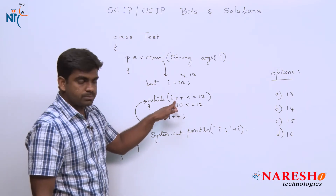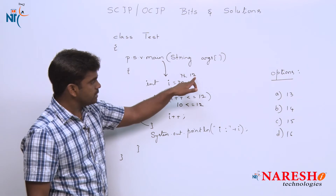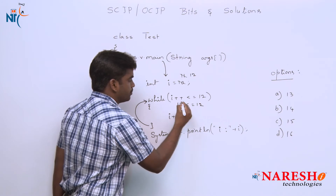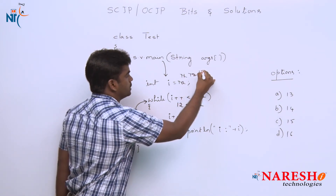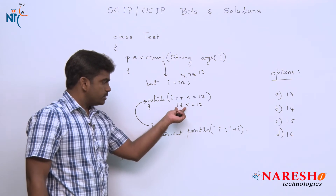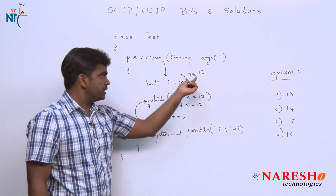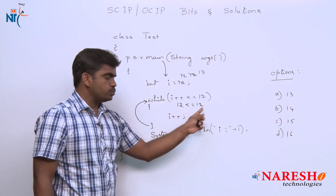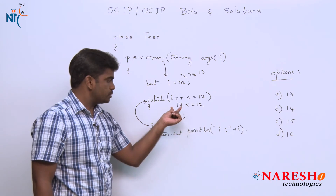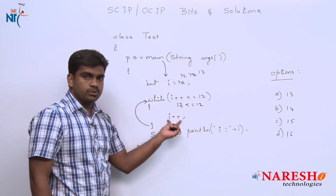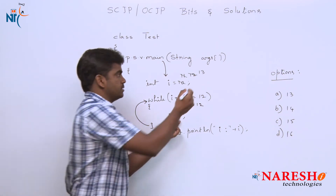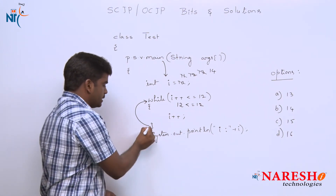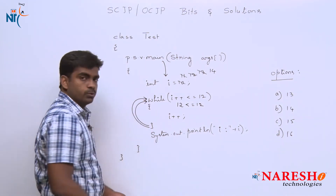Now I value is 12 and it is a post increment, so first it will substitute the value 12, then the value becomes 13. Look at the condition: 12 is less than or equal to 12 — the condition is still true. The control moves inside, I plus plus executes, and the I value is increased by 1, so it becomes 13, then 14.